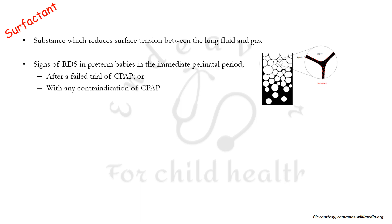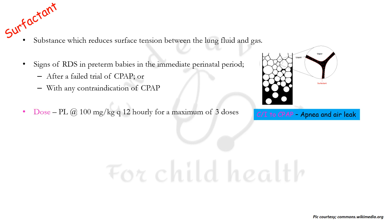The primary indication of surfactant is a baby having signs of respiratory distress syndrome who is premature, in the immediate perinatal period, after a failed trial of CPAP, or in babies having any contraindication to CPAP. The contraindications to CPAP are basically two: apnea and air leak.